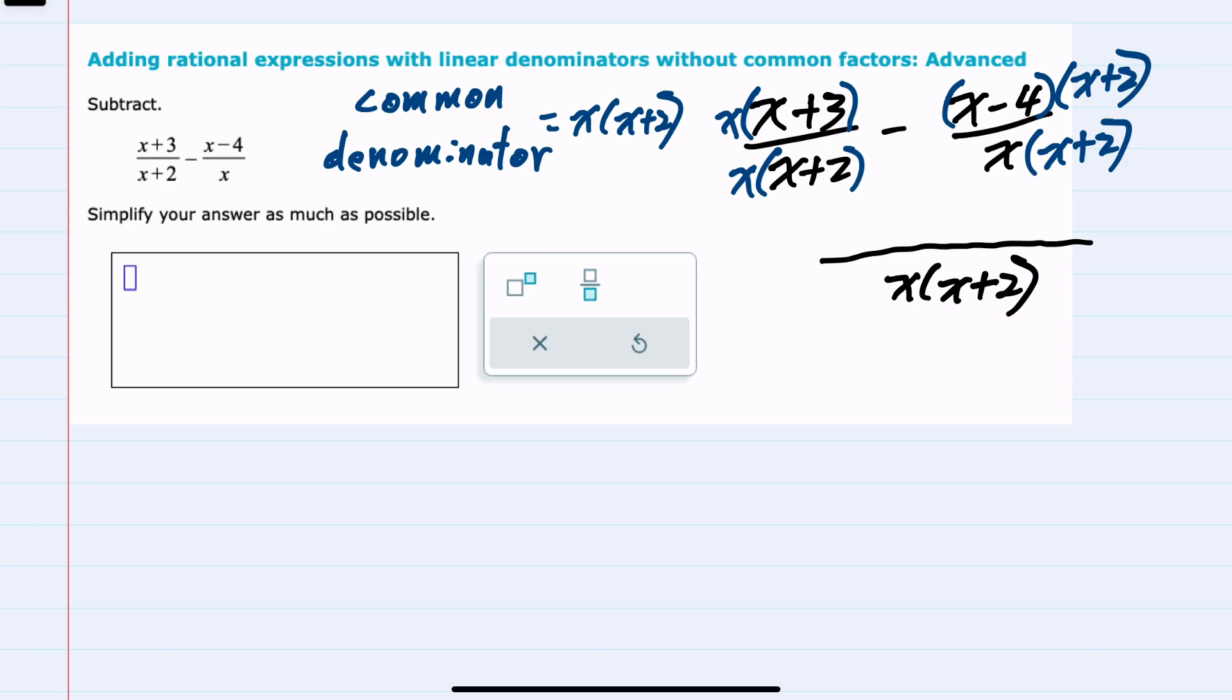We can begin to simplify by doing the multiplication in the numerators. For the first fraction, x times x is x squared, x times 3, a plus 3x. Since this is subtraction, I'll be careful with that negative and just leave it out for the time being.